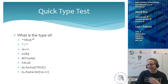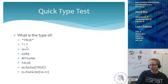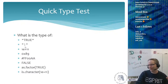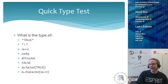Second question: what is the type of this? The answer is character again — it has quotes around it, so it's a character with the value one inside. You're not going to fall for the same trick twice, but this is indeed a character, not a numeric.